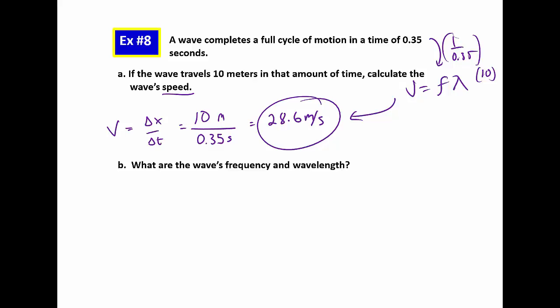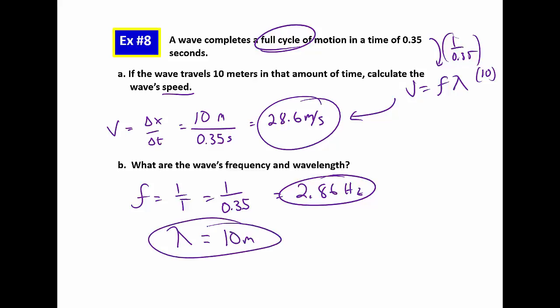The last question says, what are the waves' frequency and wavelength? So frequency is just 1 over the period. And we said already that the period would be that time it takes for one cycle. And so 2.86 hertz will be our frequency. And the wavelength, because it says a full cycle, then we know that that is one complete cycle. That's one wavelength. So we've got our 10 meters.